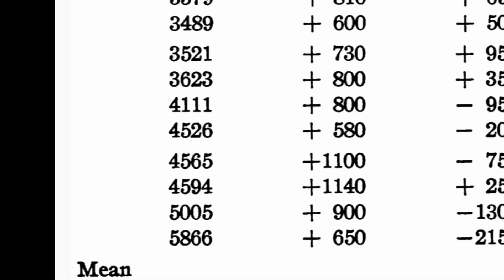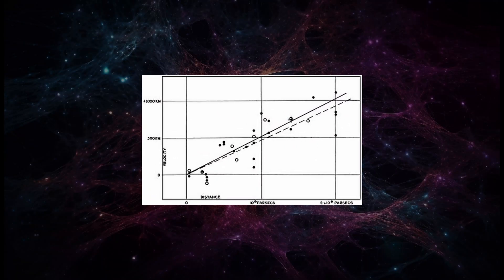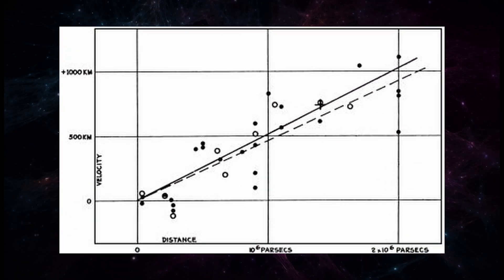Putting all of his observational data together, Edwin Hubble found that the farther galaxies were from the Milky Way, the faster they were receding from us.